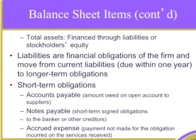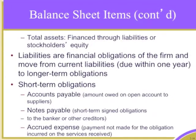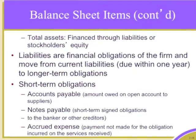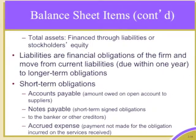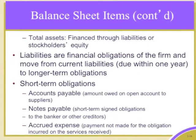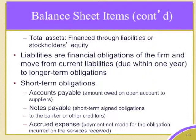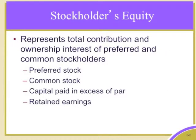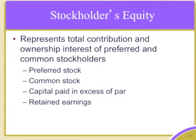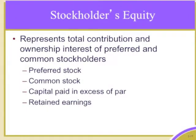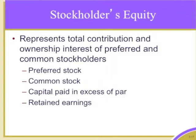Liabilities are the firm's financial obligations, moving from current liabilities due within one year down to longer-term obligations, listed above owner's equity. Short-term obligations include accounts payable, notes payable, and accrued expenses due within 12 months — these appear in the top right of the balance sheet. Stockholders' equity is at the bottom right of the balance sheet and represents the total contribution and ownership interest of both preferred and common stockholders. The statement of retained earnings summarizes changes in the stockholders' equity section of the balance sheet.